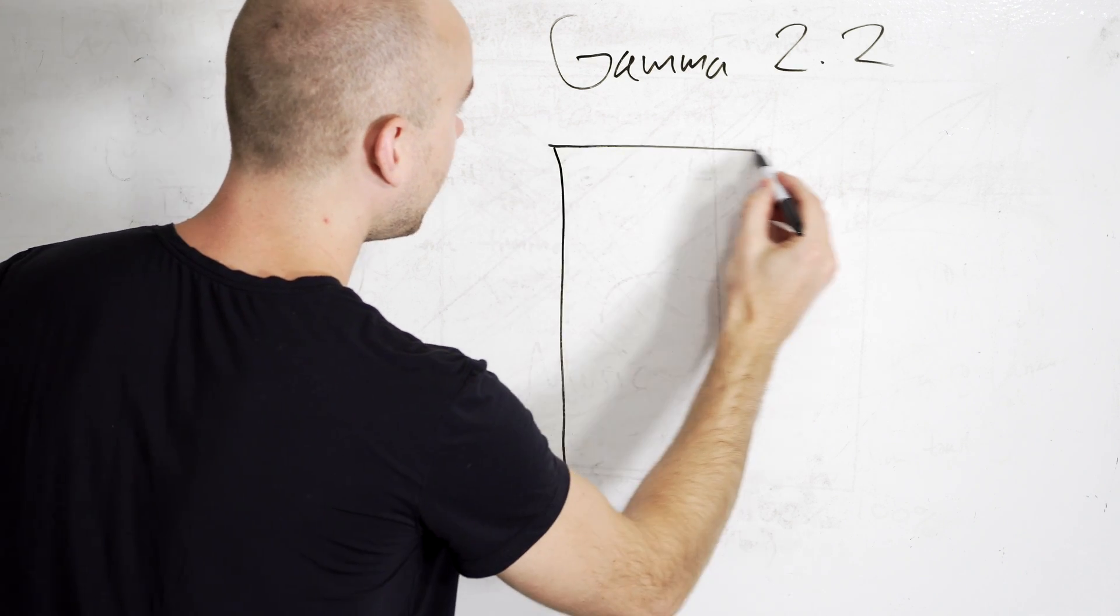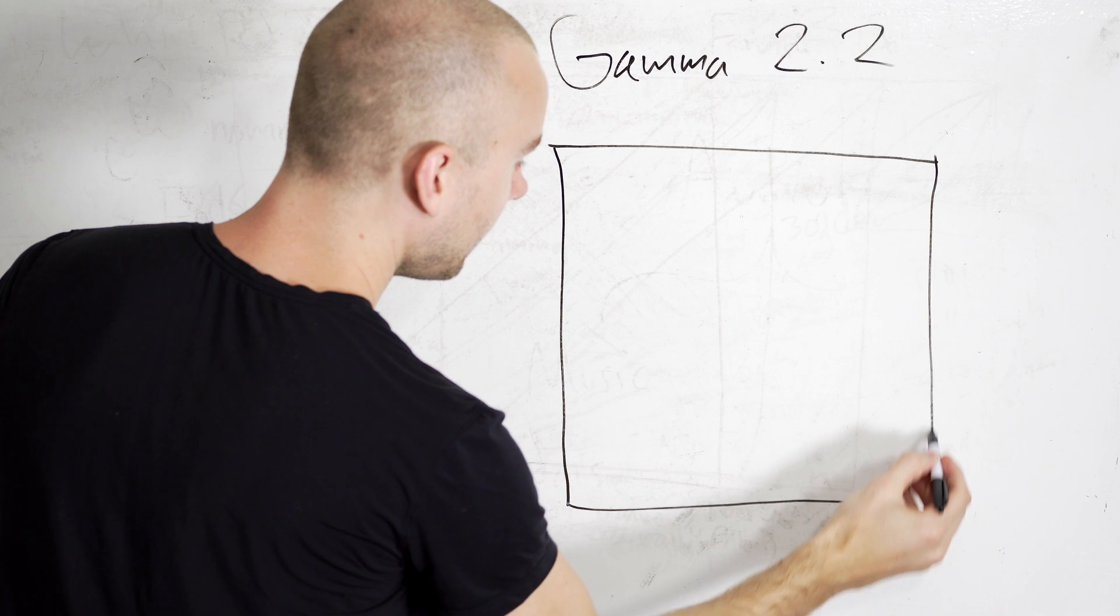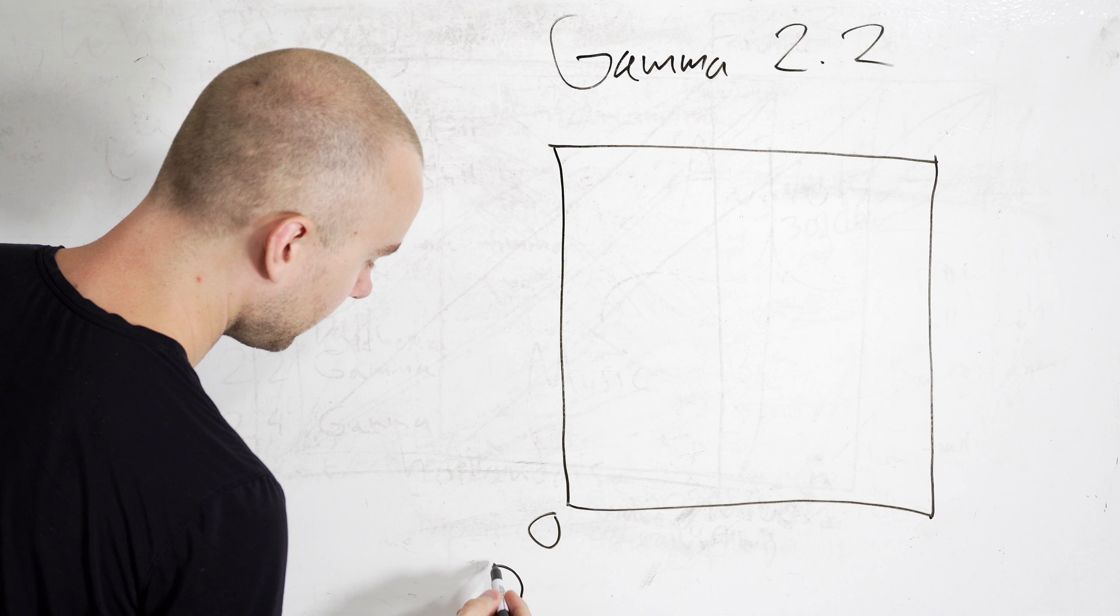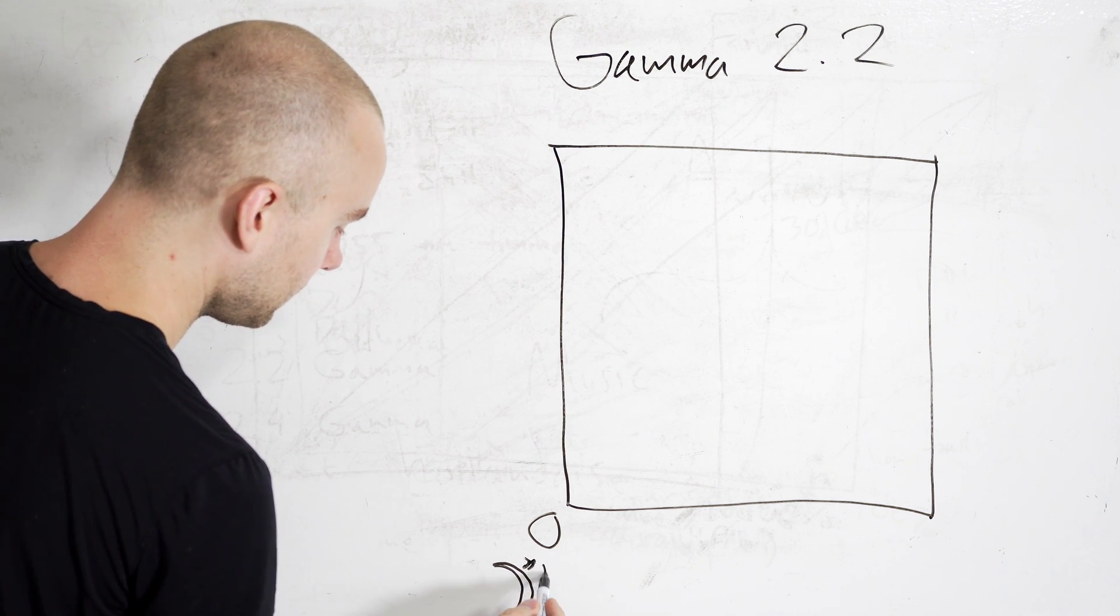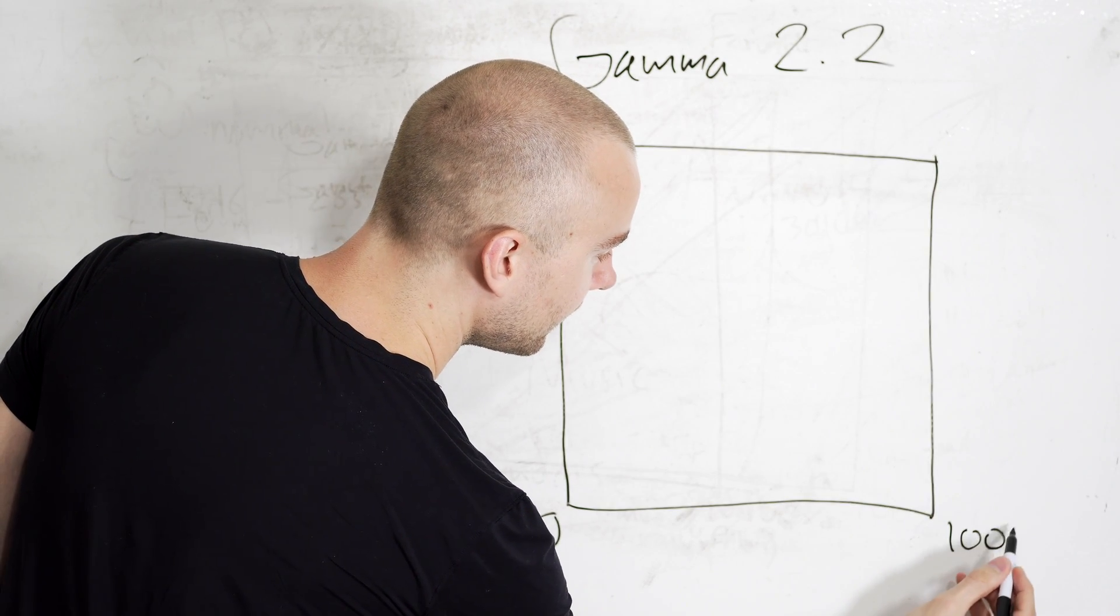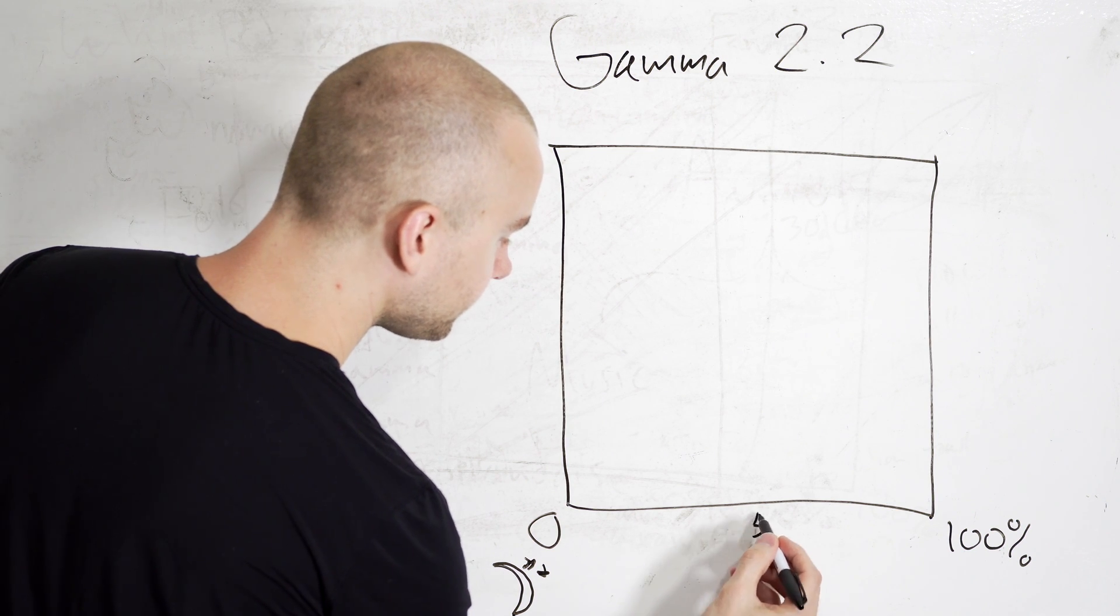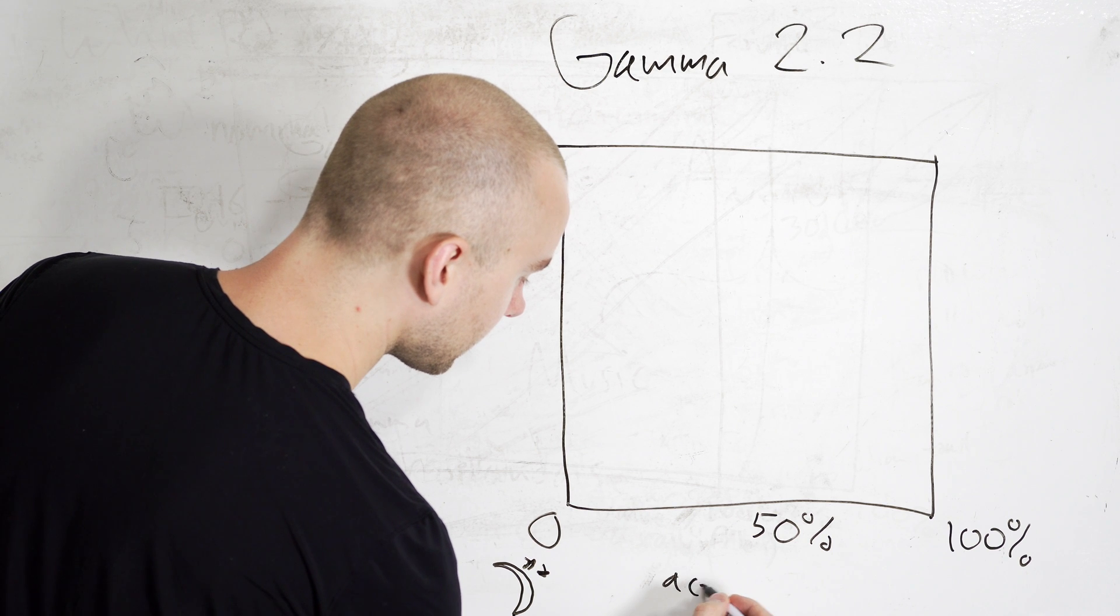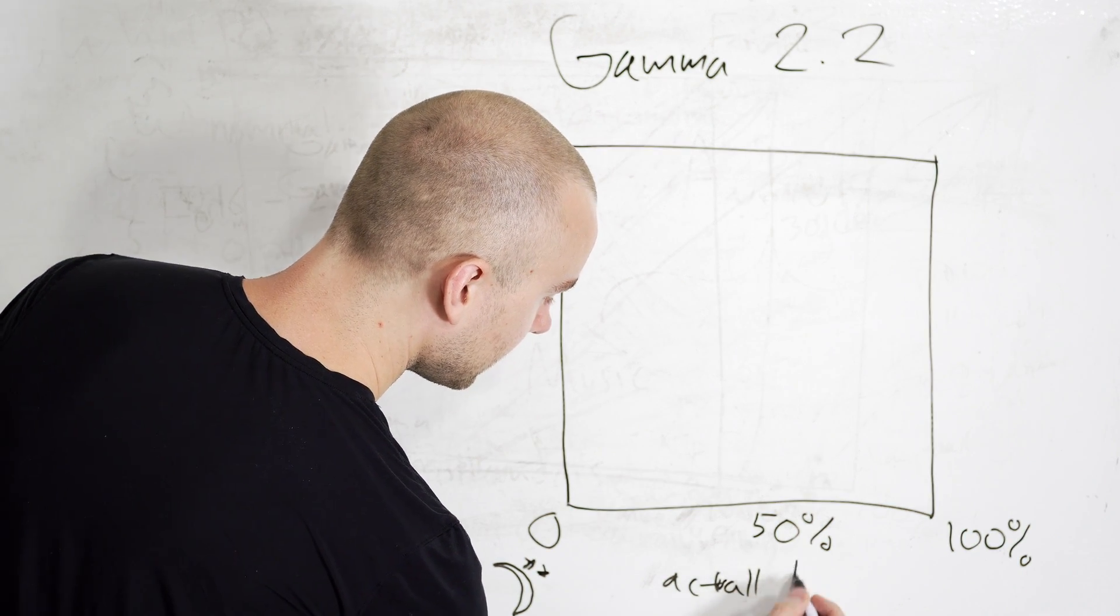I'll draw a little x-y diagram here, and we'll have zero light with a little moon and stars, whatever. Then we'll have 100% light right here, which is let's say a very bright day. We'll call it actual light.